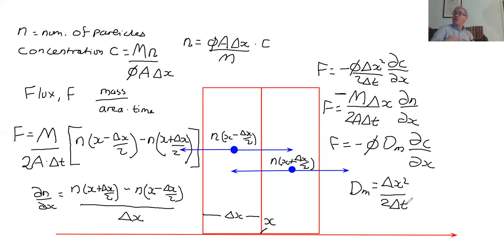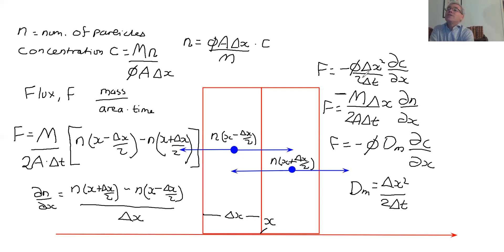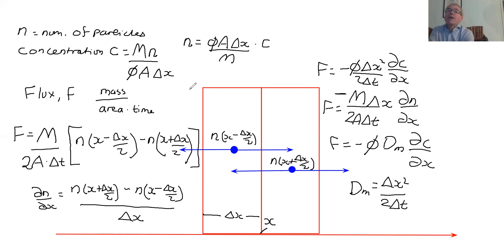If you were to do the derivation in three dimensions, assuming delta X is the hop size, the particles can now move up, down, sideways, or the other way — there's a one-in-six chance of every movement, so the two turns into a six. The porosity term comes out simply from the definition of concentration in a porous medium.